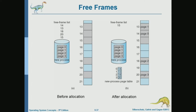We have a free frame list — a list of free frames. And we have a new process that needs four pages. So the logical address space of this process consists of four pages, and the system needs to find four frames, one for each page. It looks into the free list: for page zero, it picks the first frame, which is frame 14. Page zero goes into frame 14.